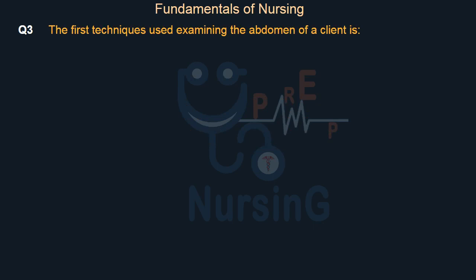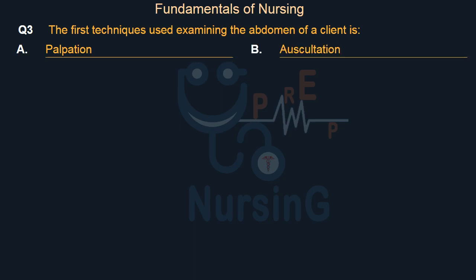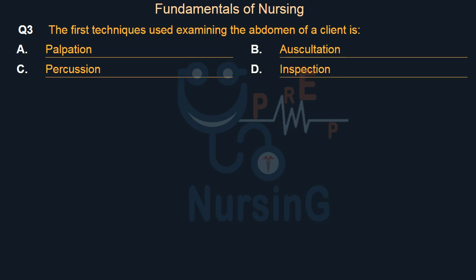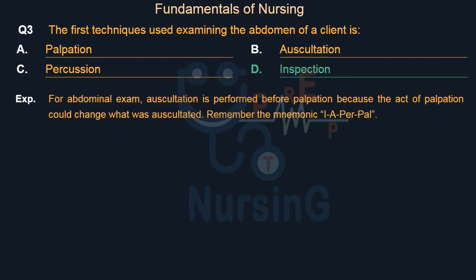The first technique used when examining the abdomen of a client is: Option A — Palpation. Option B — Auscultation. Option C — Percussion. Option D — Inspection. Right answer is Option D: Inspection. For abdominal exam, auscultation is performed before palpation because the act of palpation could change what was auscultated. Remember the mnemonic IAPAP.